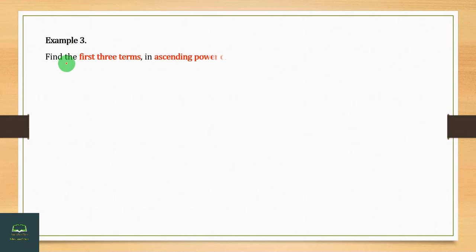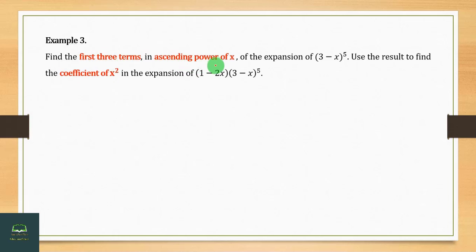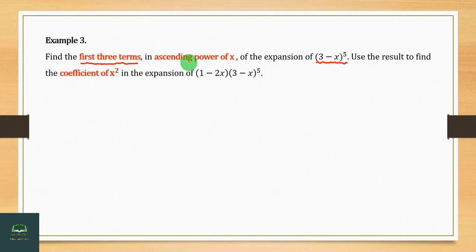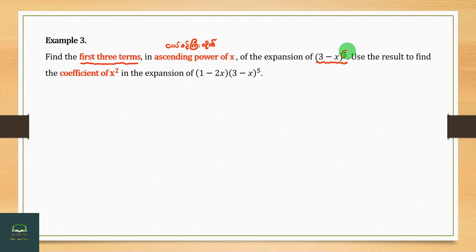Example 3 linear: find the first 3 terms in the power of h. First 3 times. You can see the expansion of 3 minus h to the power of 5. Then you can see the expansion of 3 minus h to 5.